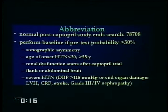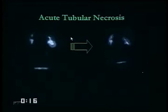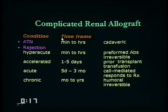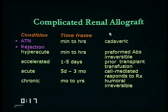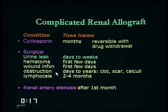Acute tubular necrosis is reversible failure of tubular function — very nonspecific. Anything from contrast injection to acute rejection can cause it. Acute tubular necrosis is seen within minutes to hours after renal allografts are inserted. Rejection takes more time than acute tubular necrosis. Surgical complications are best assessed using an anatomic study, typically CT. If you want to assess for rejection or flow pattern abnormalities, you want to do a nuclear medicine study.